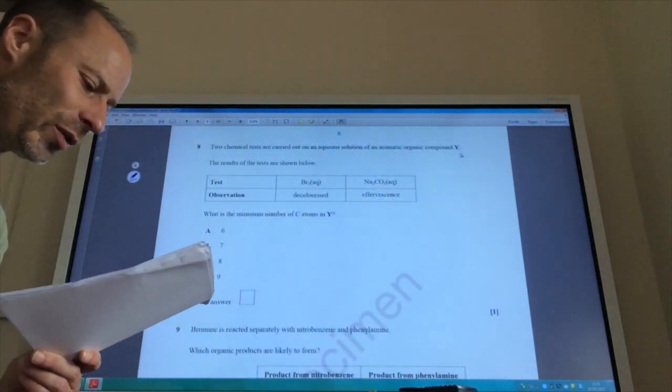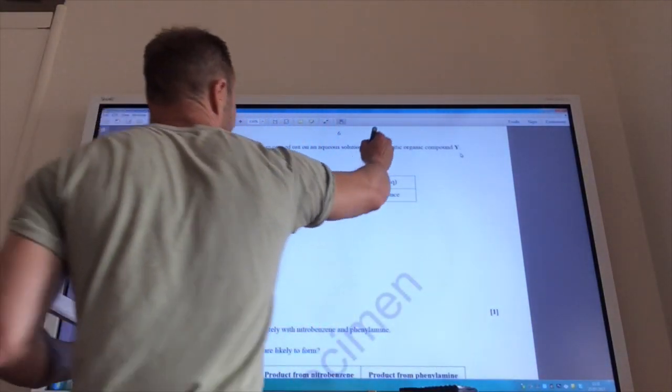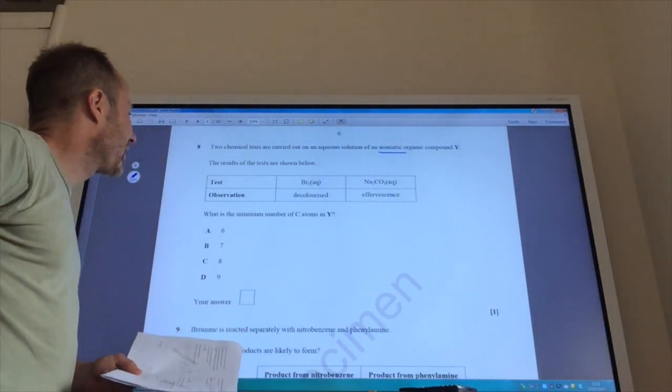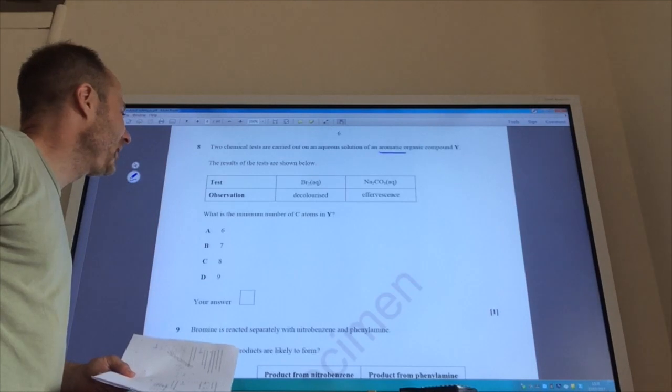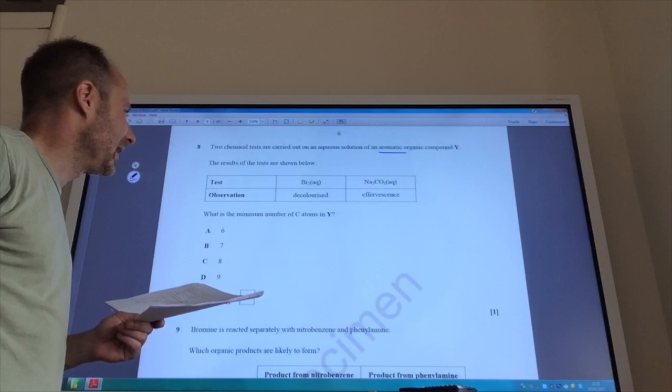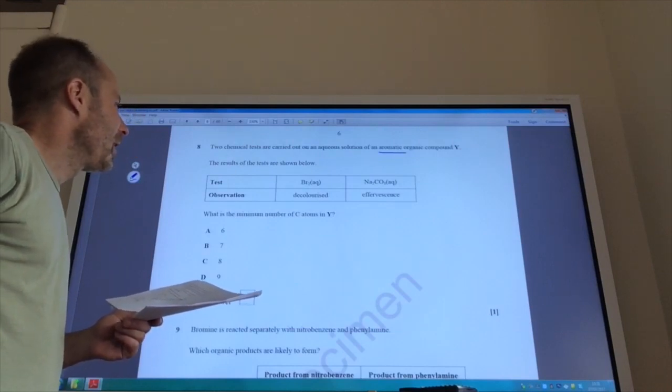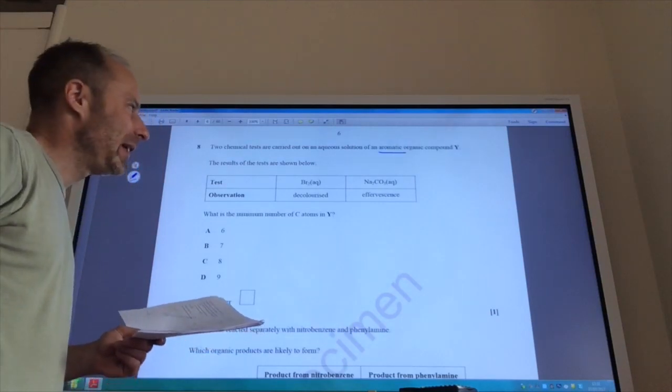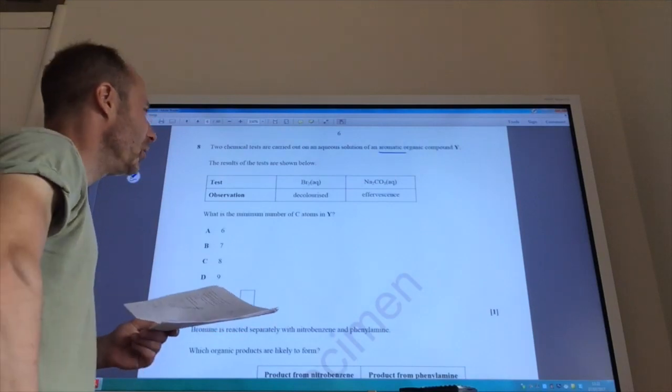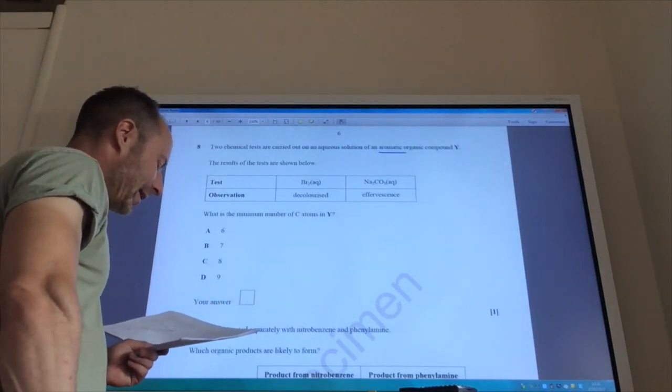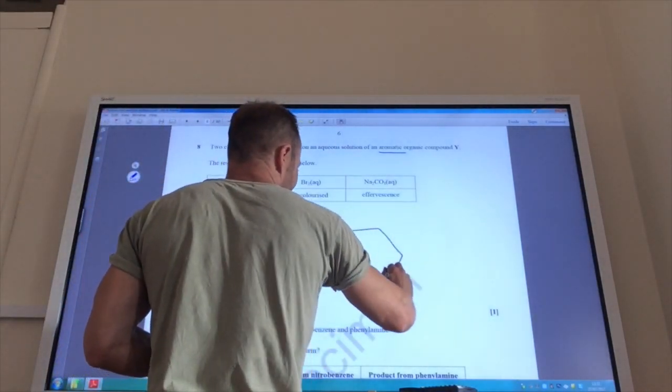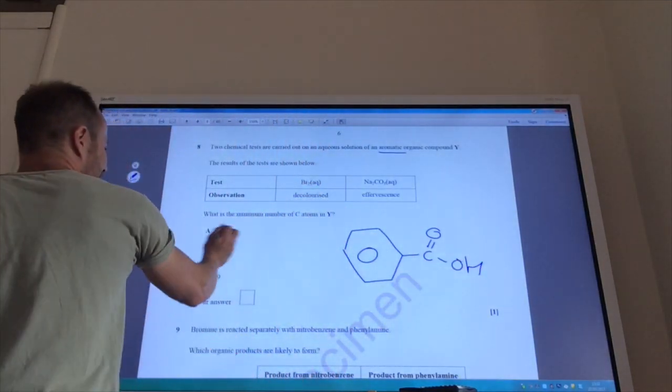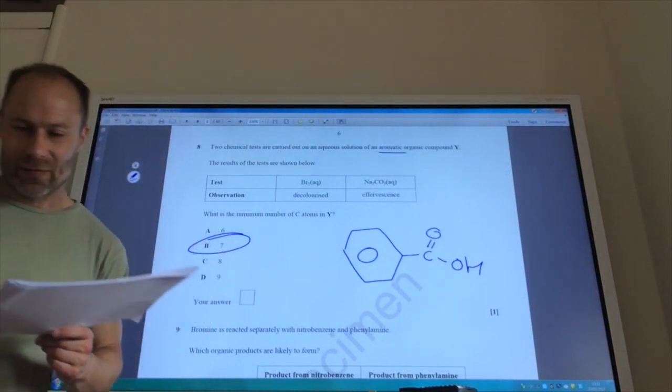So, some organic chemistry again now. Two chemical tests are added to an aqueous solution of an aromatic organic compound. So if it's aromatic, it's got to have at least 6 carbons. Okay, fair enough. The results of the tests are shown below. Bromine is decolorized. If bromine is decolorized, then it looks like it could be a phenol. But it effervesces with sodium carbonate. A phenol will not effervesce with sodium carbonate. Only a carboxylic acid will. Therefore, it must have both a phenol group and it must have a carboxylic acid group. So, because it's got a carboxylic acid group, it must have at least that going on, and therefore it must have at least 7 carbons in it.